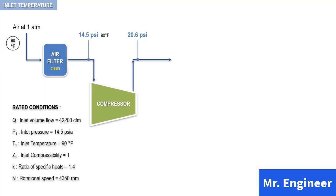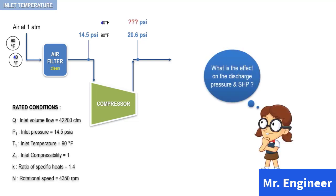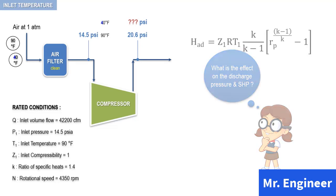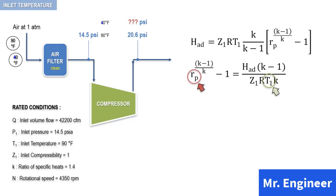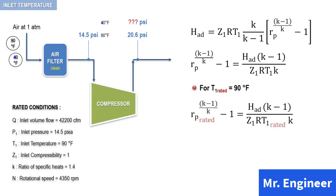In this video, we will examine the effects of a variation in inlet temperature. Let's assume that the inlet temperature drops from 90 degrees Fahrenheit to 40 degrees Fahrenheit, while other inlet conditions remain at rated values. What is the effect on discharge pressure and shaft horsepower at the rated inlet volume flow? Rearranging the adiabatic head equation yields the following in terms of pressure ratio. This equation indicates that a change in inlet temperature inversely affects the pressure ratio.